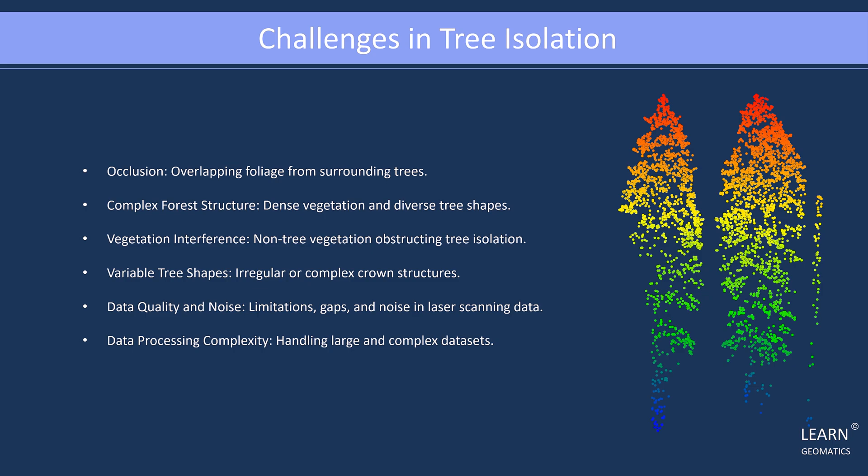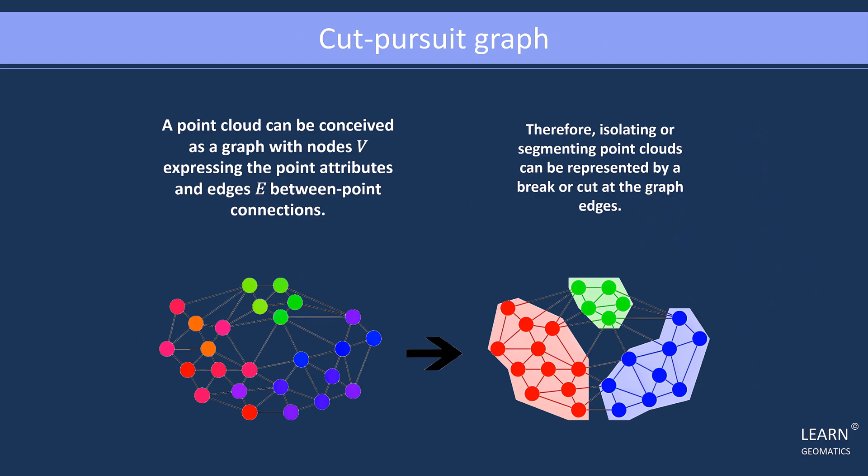To overcome these challenges, the TreeISO algorithm of CloudCompare comes into play. This algorithm is based on a segmentation technique called Cut-Pursuit Graph. In this technique, a point cloud is represented as a graph, where nodes represent point attributes and edges represent connections between points. Therefore, isolating or segmenting point clouds can be visualized as a cut at the graph edges.